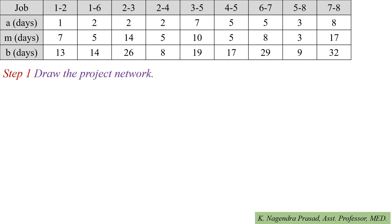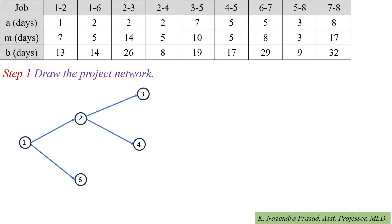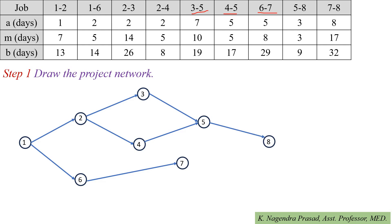The first step is to draw the project network. The first activity is 1 to 2. Then draw activity 1 to 6. Next, draw activities 2 to 3 and 2 to 4. Next activity is 3 to 5 and also 4 to 5. Then draw activity 6 to 7, then activity 5 to 8, and finally activity 7 to 8.